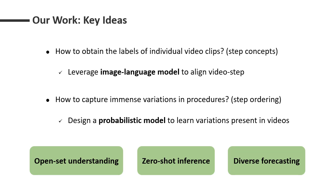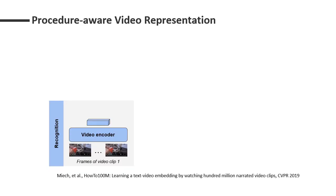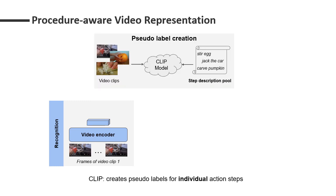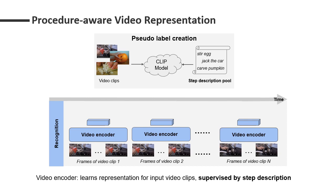Now I will briefly present our model. Given a short video clip, we train a video encoder to extract visual features. This encoder tries to recognize individual action steps. To create pseudo-labels for the input video, we leverage the pre-trained CLIP model to compute the similarity scores between each video clip and all step descriptions in the pool. Then our video encoder learns to output the video representation guided by the pseudo-labels.